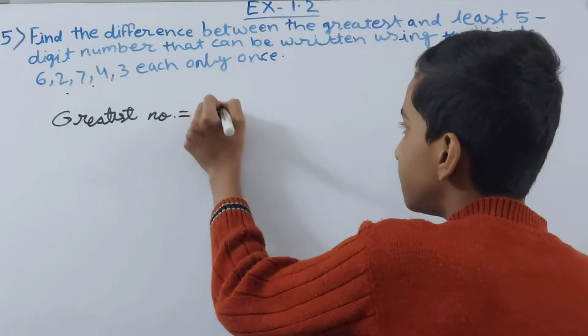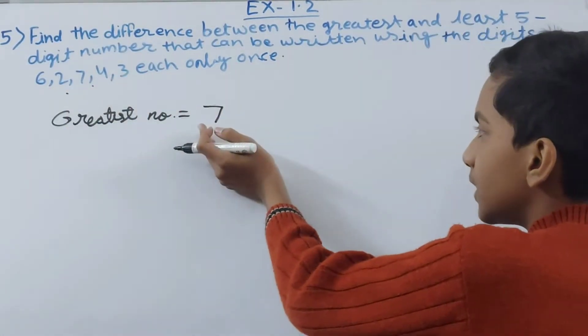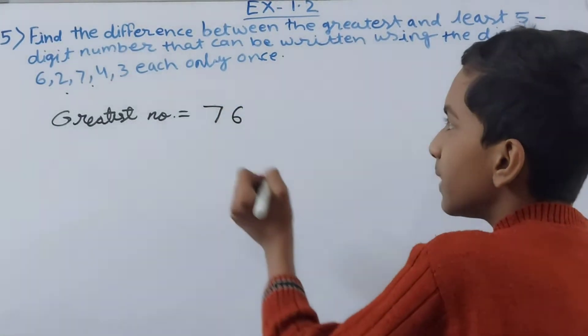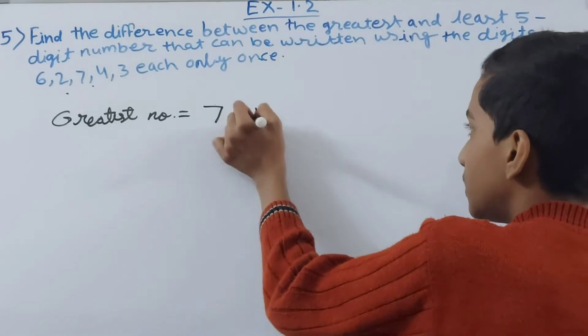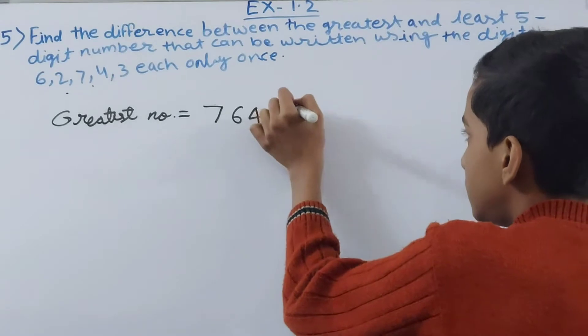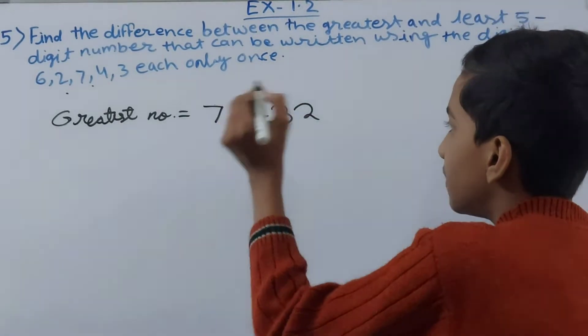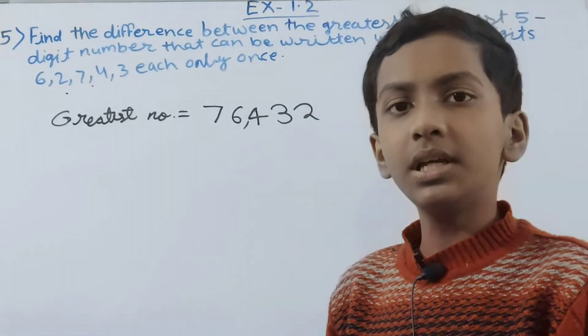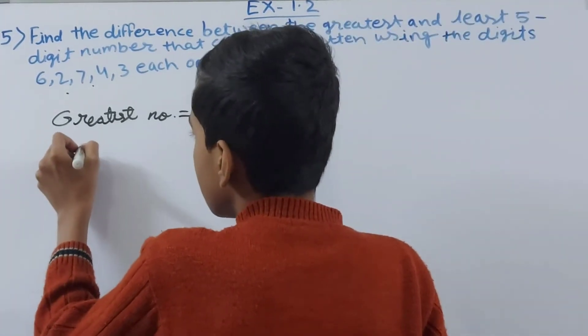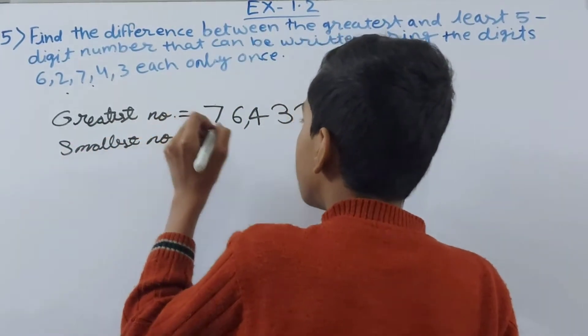Then after that comes 6. Before 7 it comes 6, so we write 6. Then we have 4 which is smaller than 6, then 3 is smaller than 4, and finally 2 is smaller than 3. So this is our number, this is 76432. Now we will make the smallest number out of these.